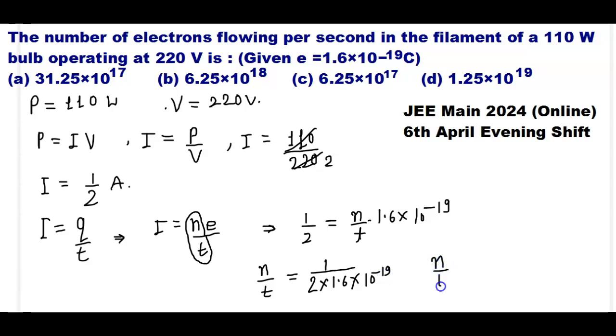Solving this, the number of electrons flowing through the filament per second is equal to 31.25 into 10 to the power 17.